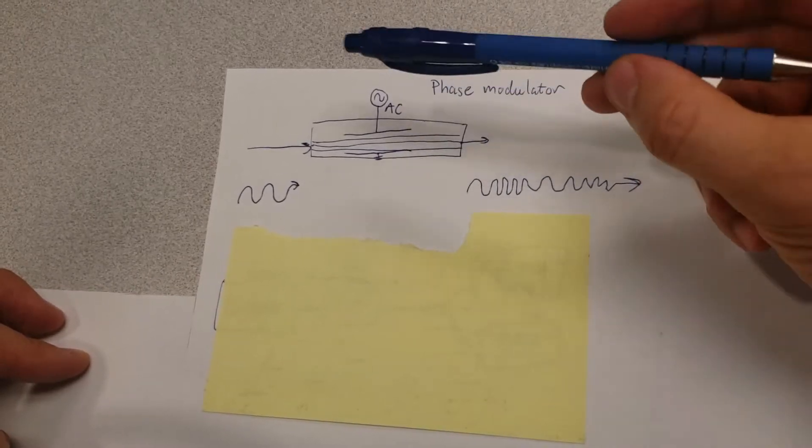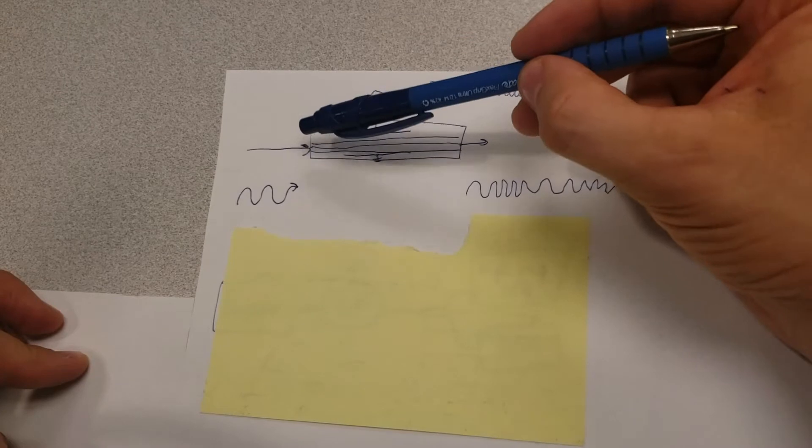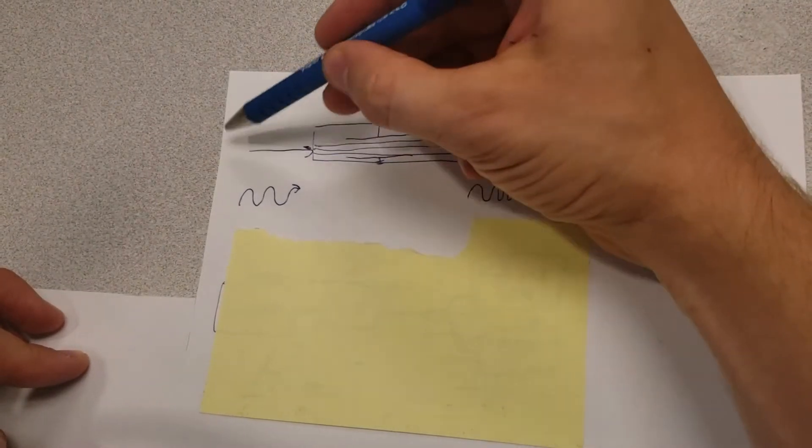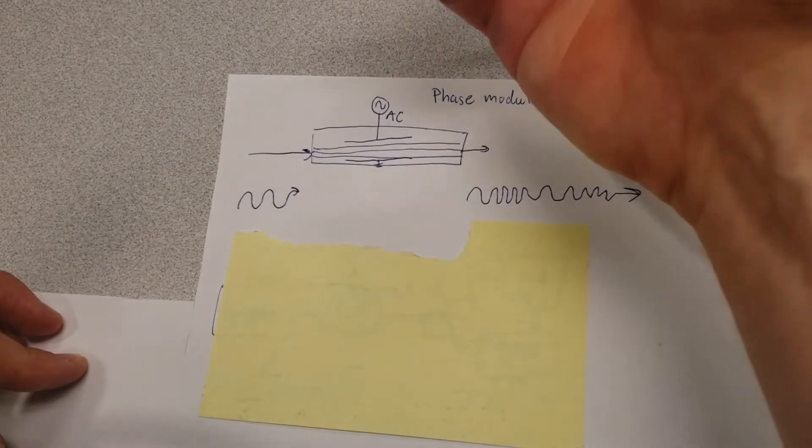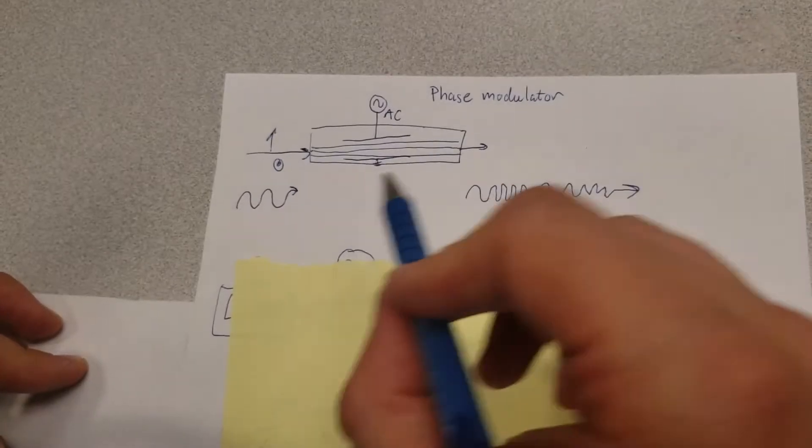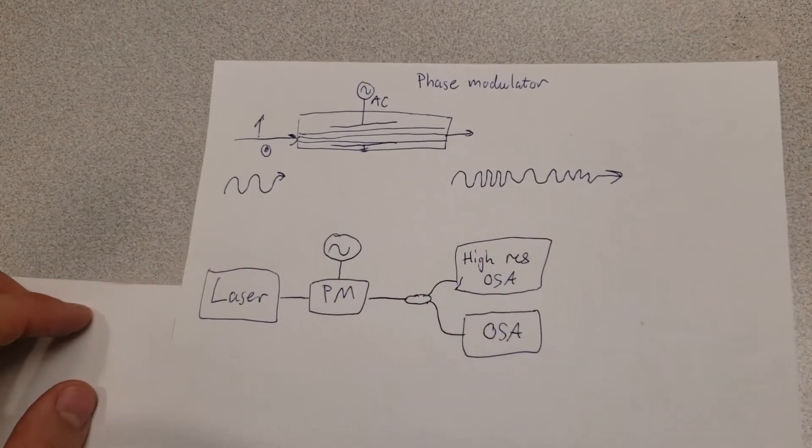Now one really important thing to keep in mind is that when you send light into a phase modulator of this particular type, then you have to make sure that it's purely polarized, so you have to make sure that you have some kind of device out here that cleans up the polarization, ensures that it's only in either this direction or perpendicular to it, in order to make sure you get a clean output. So let's see how we can actually use that in an experiment.